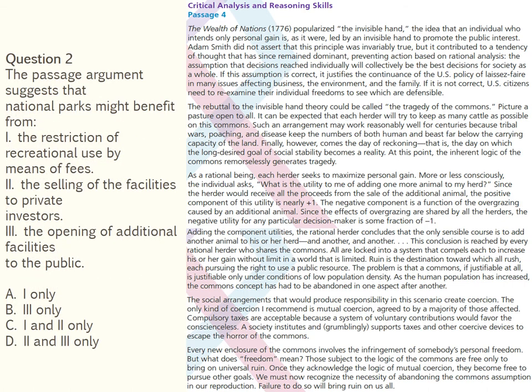The second question reads: 'The passage argument suggests that national parks might benefit from: 1. the restriction of recreational use by means of fees; 2. the selling of facilities to private investors; 3. the opening of additional facilities to the public.' The correct answer is A. Since everyone has the right to use a public resource, pressure on national park ecosystems increases as population increases. Therefore, these lands would benefit from fees that reduce their use by the public (option 1). Opening additional park lands might delay the problem but would only expose more resources to the tragedy of the commons.